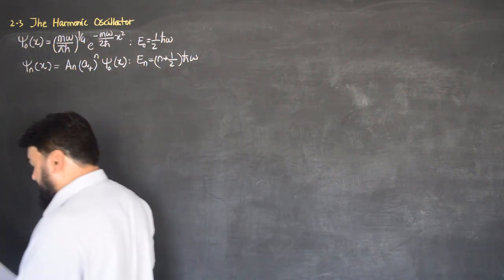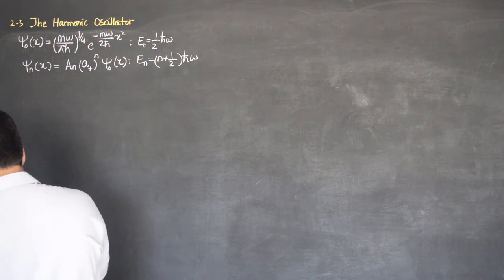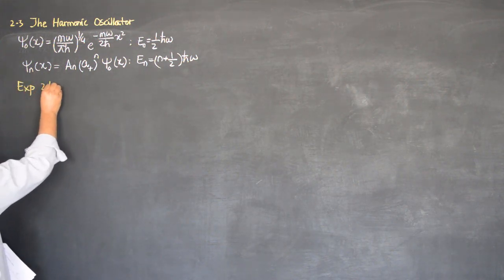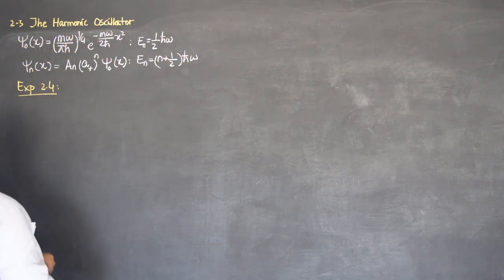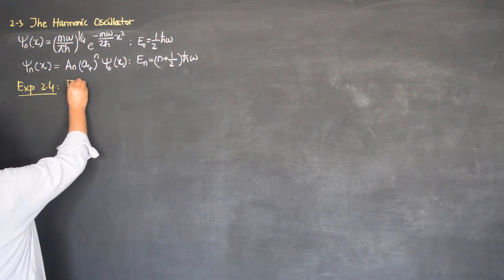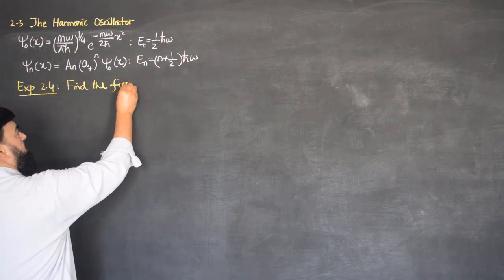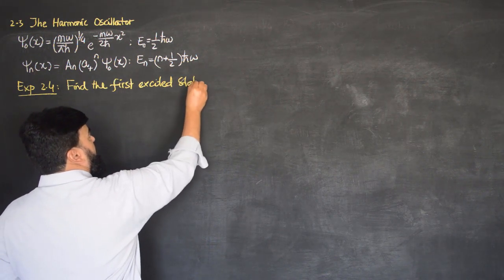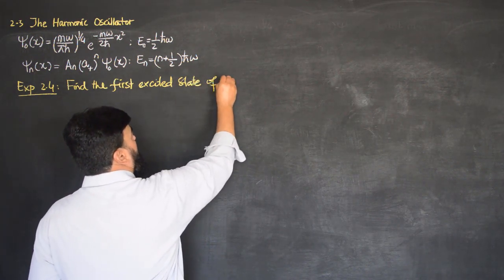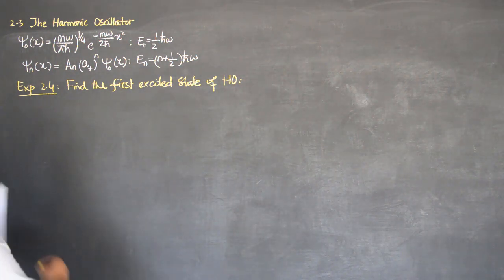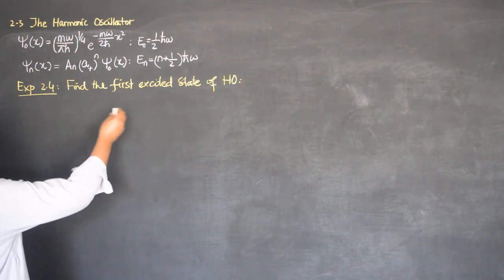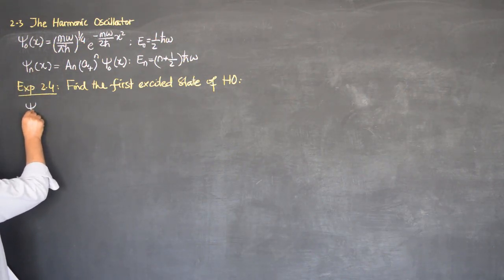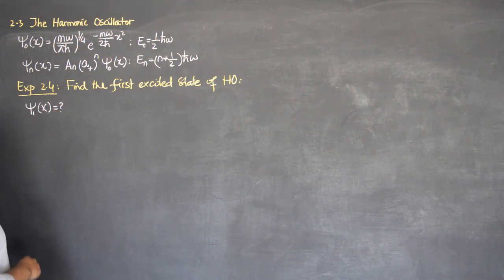Now the question we will handle is Example 2.4. This example asks us to find the first excited state of the harmonic oscillator, so we need to find ψ₁(x).